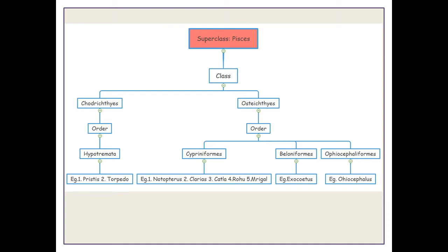Today we will discuss the classification of Superclass Pisces. The Superclass Pisces is divided into two classes: Chondrichthyes, which have a cartilaginous endoskeleton, and Osteichthyes, which have a bony skeleton.